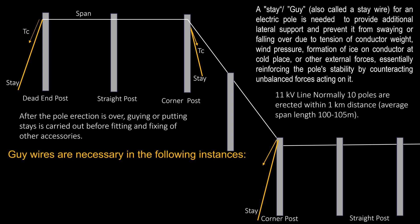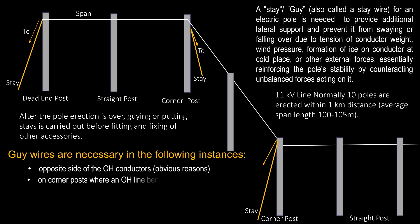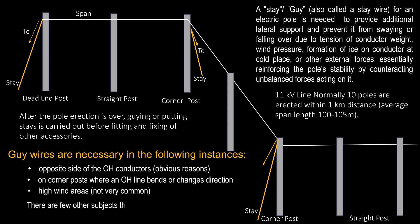Guy wires are necessary in the following instances: on the opposite side of overhead conductors; on corner posts where an overhead line bends or changes direction; in high wind areas. Tension exerted by the weight of conductors on poles from both sides of the span may displace or bend the pole, and this can be counterbalanced by providing a stay at a suitable position.